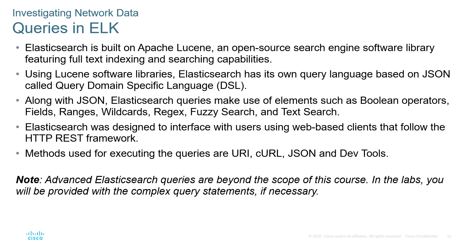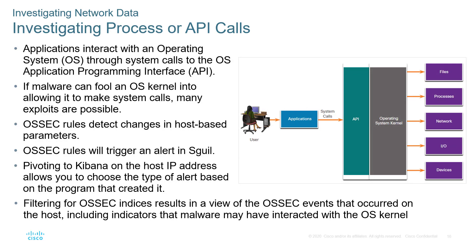Now that we understand our queries using either ELK or Squil, we need to understand the ability to investigate processes or API calls. Through our OS we have OS calls using our API, or Application Program Interface. If malware can fool an OS kernel into allowing unauthorized system calls, then exploits could be easy. OSEC rules can detect changes in host-based parameters and trigger alerts in Squil. Pivoting to Kibana using the host IP will allow you to choose the types of alerts based on the program that creates them. Filtering for the OSEC indices will result in a view of OSEC events that occurred on the host.